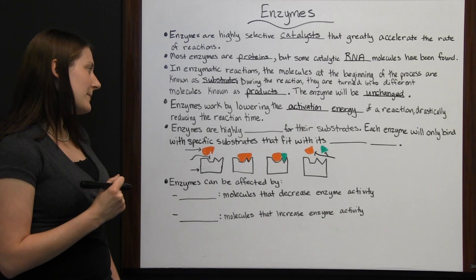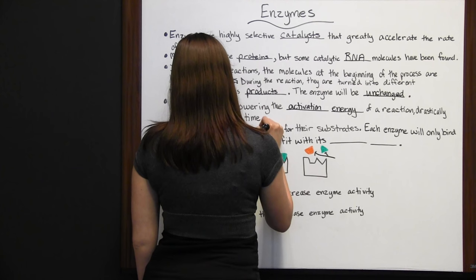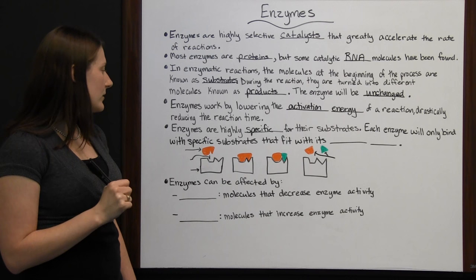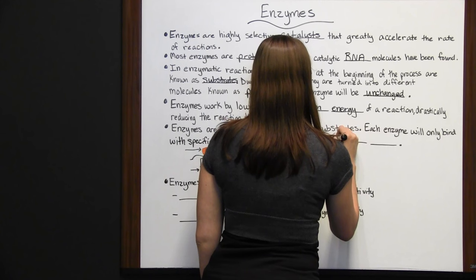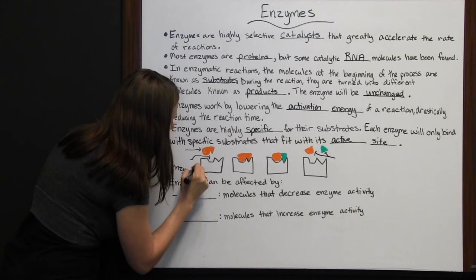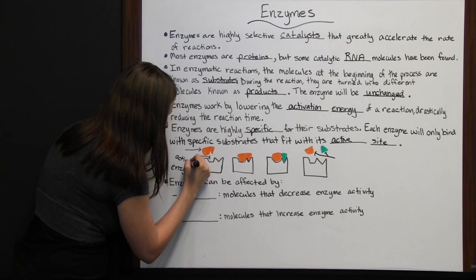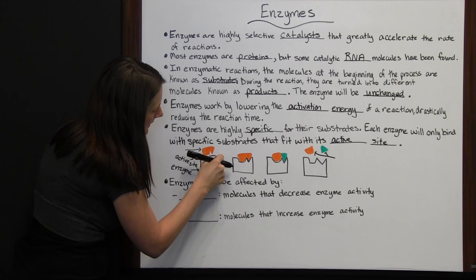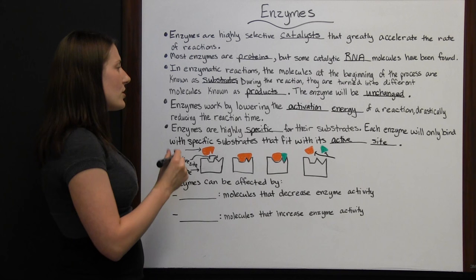Without enzymes, reactions would take a very long time. Enzymes lower the activation energy and make reactions happen much faster. In fact, many metabolic processes would not be fast enough to sustain life without enzymes. Enzymes are highly specific — each enzyme will only bind with specific substrates that fit with its active site.